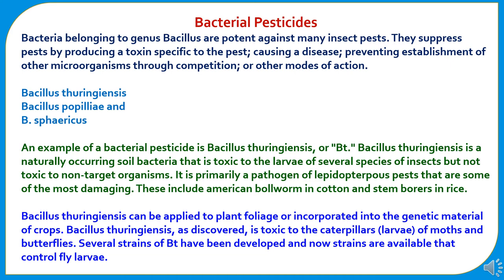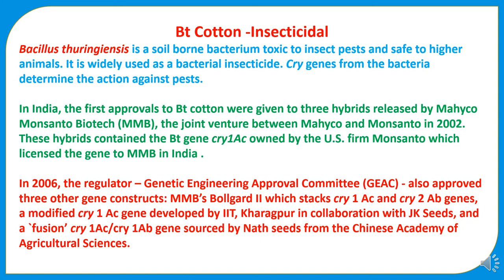Bacillus thuringiensis can be applied to plant foliage or incorporated into the genetic material of crops. It has been discovered to be toxic to the caterpillars and larvae of moths and butterflies. Several strains of Bt have been developed, and strains are now available that control fly larvae. In the case of Bt cotton, it has the properties of insecticidal control. In India, the first approvals for Bt cotton were given to three hybrids released by Mahyco Monsanto Biotech (MMB), the joint venture between Mahyco and Monsanto, in 2002.